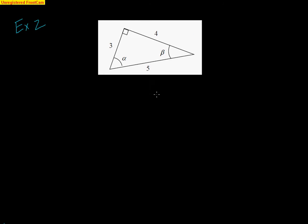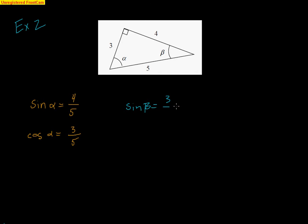Here's another example where the triangle is oriented differently. Sine of alpha: the opposite is 4 and the hypotenuse is 5. Cosine of alpha: the adjacent is 3 and the hypotenuse is 5. For beta: sine of beta is the opposite, which is now 3, over hypotenuse 5. Cosine of beta is the adjacent 4 over hypotenuse 5. Notice that sine of alpha and cosine of beta are both 4/5, while cosine of alpha and sine of beta are both 3/5 — the opposite and adjacent flip around depending on which angle you focus on.